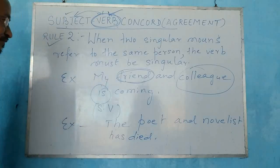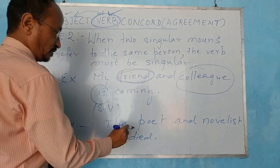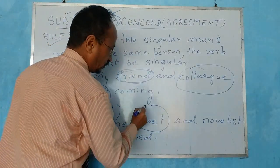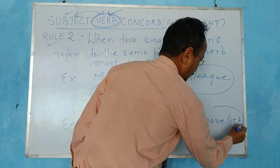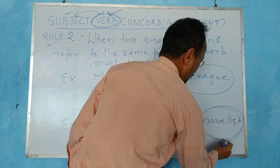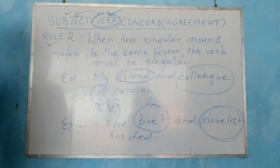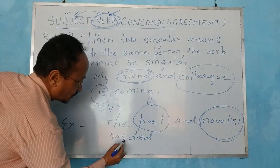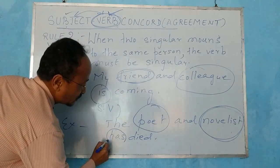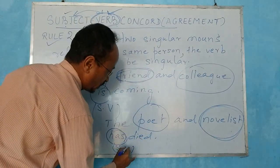One more example. Look at the sentence: 'The poet and the novelist has died.' This person is both — it has both characters. He is a poet as well as a novelist. So we are talking about one person having two characters. So the verb has to be singular. This singular verb has been used here.